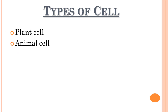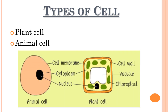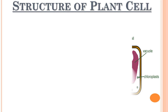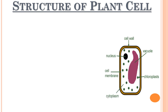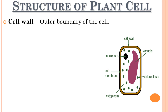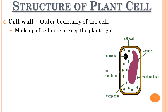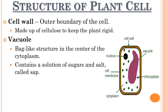There are many different types of cells. We are going to discuss two main categories: plant cells and animal cells. Let's start with the structure of the plant cell. Plant cells have a cell wall, which is the outer boundary of the plant cell. It is made up of a substance called cellulose and allows the plant to stay rigid and hard. Plant cells contain a large vacuole in the center of the cytoplasm, which looks like a bag. This vacuole contains a solution of sugars and salts known as sap. Cell sap in the vacuole pushes the cytoplasm against the cell wall to keep the cell rigid and in shape.